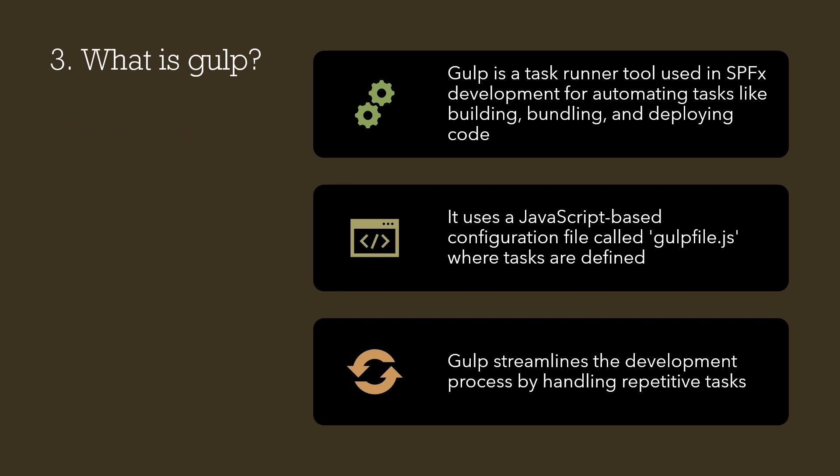The third question is: what is Gulp? Gulp is a task runner tool. It is one of the important tools used in SPFX development for automating tasks like building, bundling, and deploying the code.